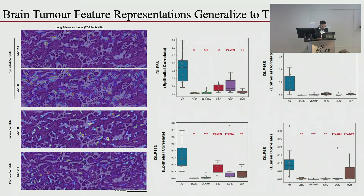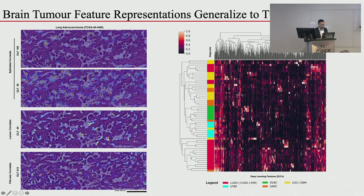We also applied this to TCGA data. For lung adenocarcinoma, there's some loss of performance, but the patterns are preserved: epithelial features label the epithelium, luminal features label luminal aspects, and fibrotic features label fibrotic elements. Individual epithelial features are very high in epithelial tumors in the TCGA database and low in non-epithelial cancers — and you can use these to group TCGA cases into interesting classes sharing histological features.